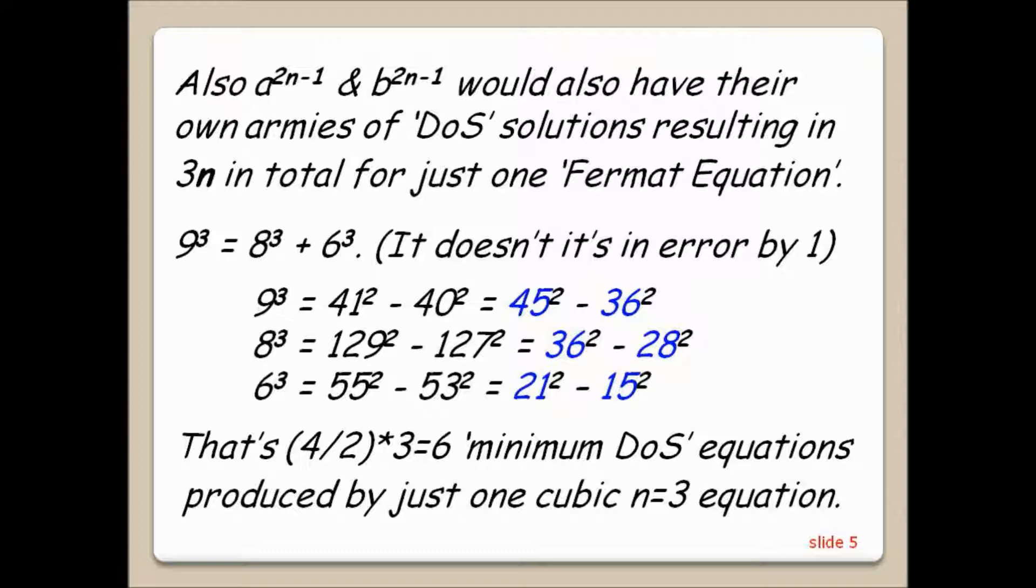That's 4 over 2 times 3 equals 6 minimum difference of square equations produced by just one cubic n equals 3 equation.